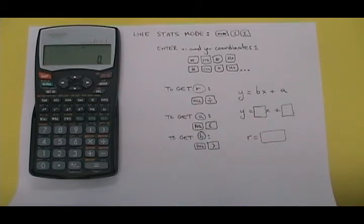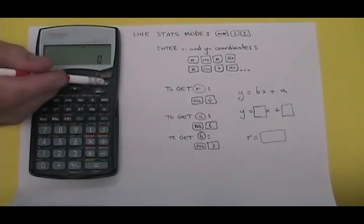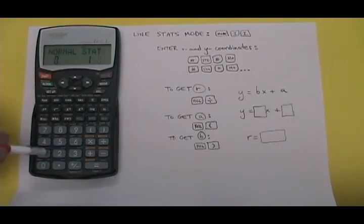The first thing you have to do is get into the mode for entering stats, but not just any stats, the x and y coordinates of points on a straight line stats. To get into line stats mode, you do mode 1, 1. So I press the mode button, then I press 1 to choose stat, and then 1 to choose line.